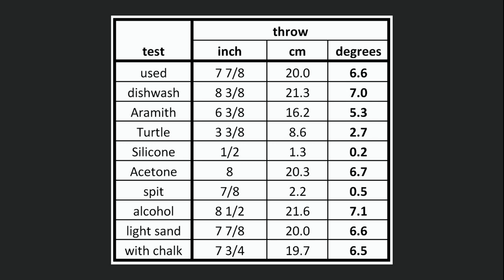Here's a summary of all of the results. Standard pool ball cleaners reduce throw some. Car wax can reduce throw significantly. Saliva and silicone spray can each practically eliminate throw. About 7 degrees seems to be the maximum throw possible for a 30-degree cut, which probably corresponds to the gearing limit discussed earlier. Attempting to create additional friction with sandpaper and chalk did not increase the amount of throw. It appears that squeaky clean surfaces — from dishwashing liquid and alcohol — create the most throw.